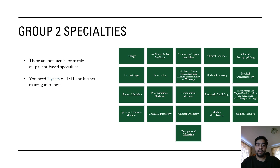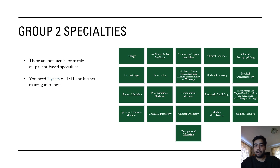Group 2 specialties are non-acute, primarily outpatient-based specialties, and you need two years of IMT for further training into these. They include: allergy, audiovestibular medicine, aviation and space medicine, clinical genetics, clinical neurophysiology, dermatology, infectious disease (when dual with medical microbiology or virology), medical oncology, medical ophthalmology, nuclear medicine, pharmaceutical medicine, rehabilitation medicine, medical microbiology, and occupational medicine.